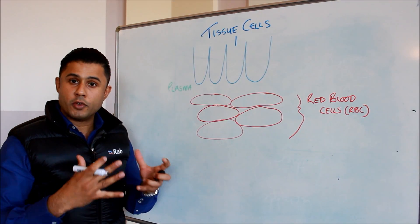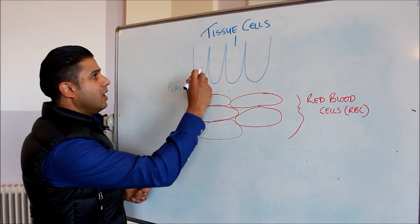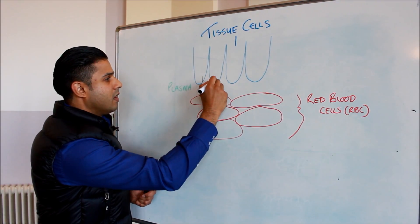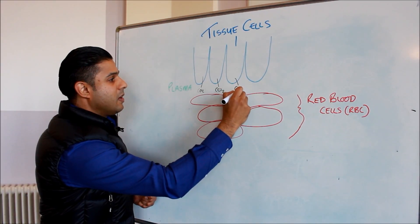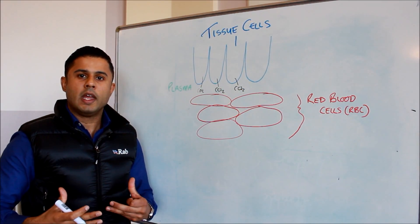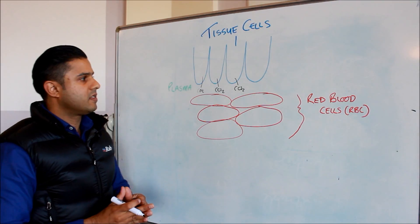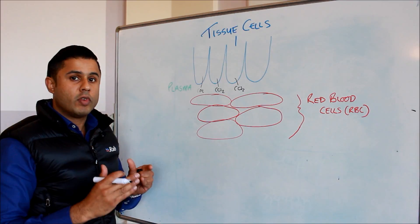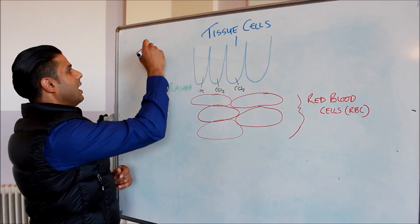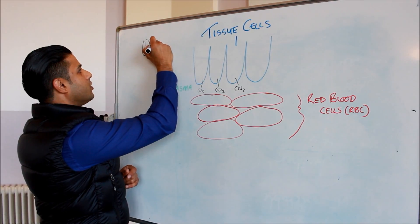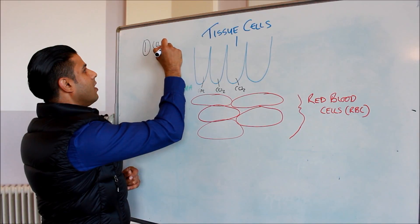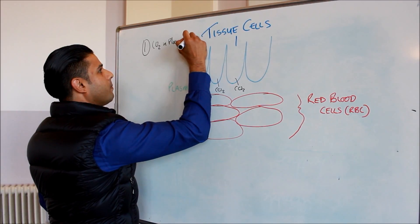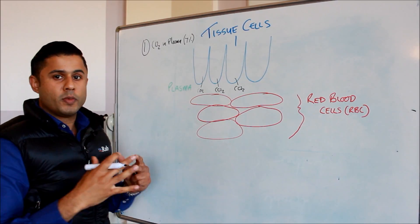Every time we produce or use energy within our tissues we're producing carbon dioxide. So these are the tissue cells, these are the red blood cells, and this is the plasma. We're producing CO2, and cells are continuously releasing CO2 — and obviously CO2 production increases as we start to do a high level of exercise. CO2 can be transported away from the tissue cells in three ways. The first way is by just diffusing into the plasma, contributing to about 7% of the CO2 carried away from our tissues.